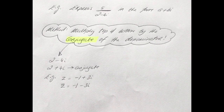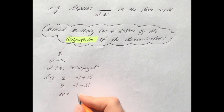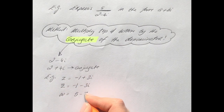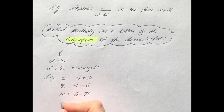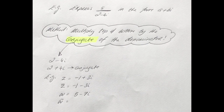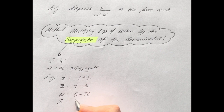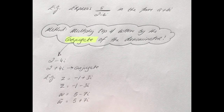Let's take another quick example. Say you have the complex number w equals 5 minus 7i. What would be the conjugate? Pause the video and write down your answer. The answer is 5 plus 7i — you change the sign of the imaginary part only.